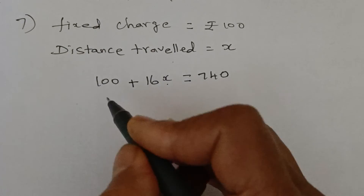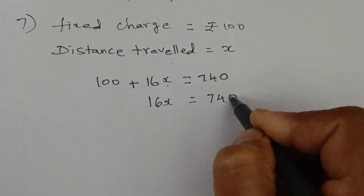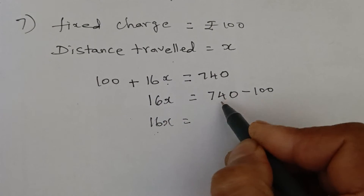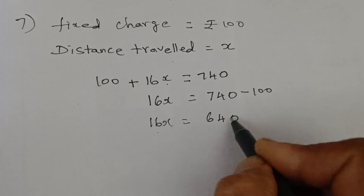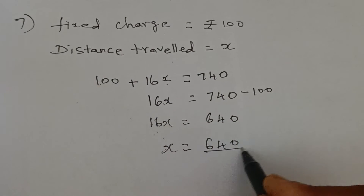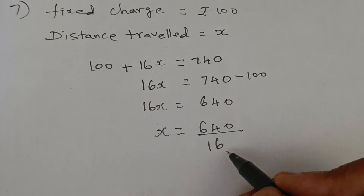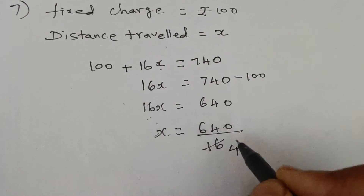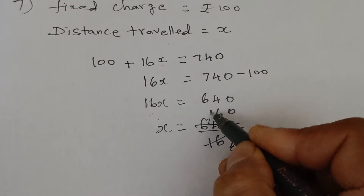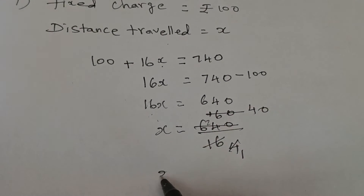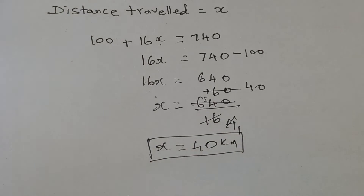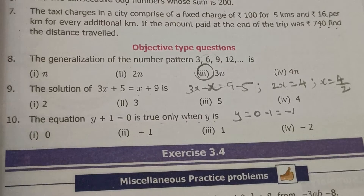Now we solve the equation 100 + 16x = 740. Keep the x term on the left; take 100 to the right side — plus 100 becomes minus 100. So 16x = 740 − 100 = 640. Therefore x = 640 ÷ 16. Cancel by 4 twice: 640 ÷ 4 = 160, then 160 ÷ 4 = 40, and 16 ÷ 4 = 4, then 4 ÷ 4 = 1. So x = 40. The distance traveled is 40 kilometers.